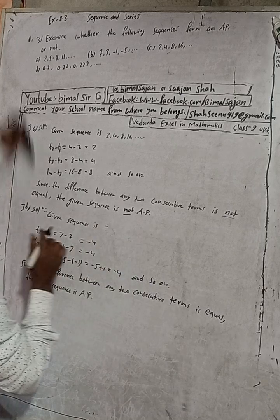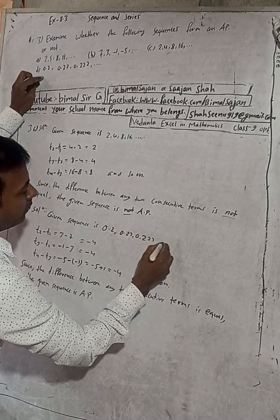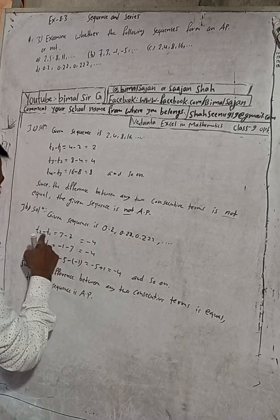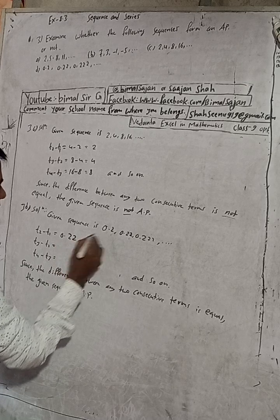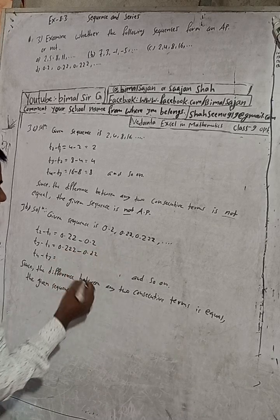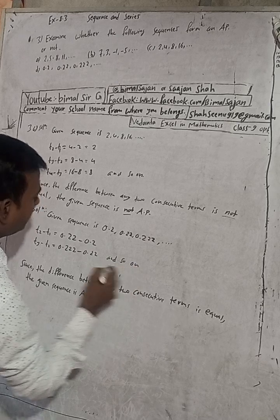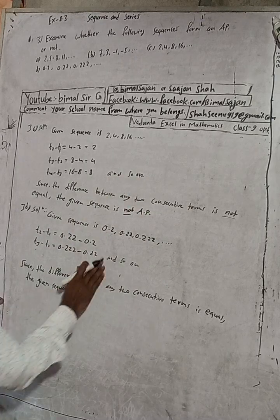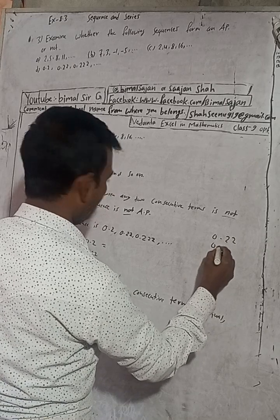For part D, the given sequence is 0.2, 0.22, 0.222, dot dot dot. Again, find the difference between consecutive terms: T2 minus T1 is 0.22 minus 0.2, and T3 minus T2 is 0.222 minus 0.22.